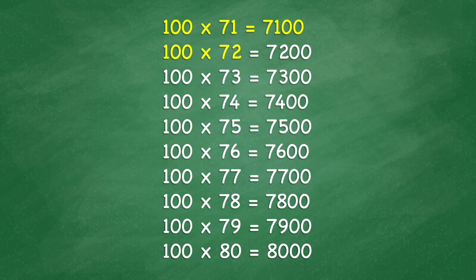100 times 72 equals 7,200. 100 times 73 equals 7,300. 100 times 74 equals 7,400. 100 times 75 equals 7,500. 100 times 76 equals 7,600. 100 times 77 equals 7,700. 100 times 78 equals 7,800.